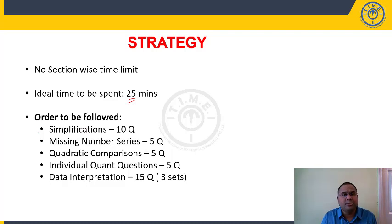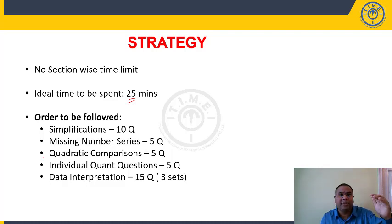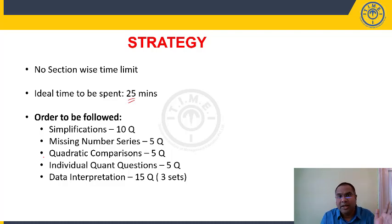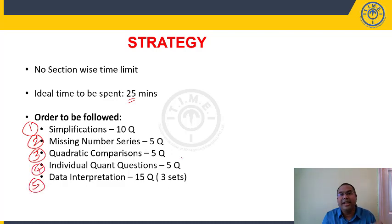The order to follow is: when you begin the test, first scan all 40 questions to see what areas are covered. You may find 5 simplification questions at the beginning and 5 towards the end. Simplifications are easy to score and demand less time. So finish simplifications first, then missing number series, then quadratic comparisons, then individual questions, and finally data interpretation.